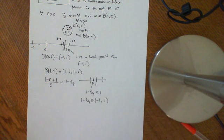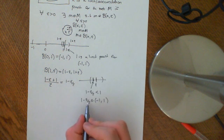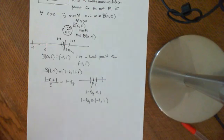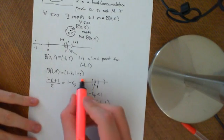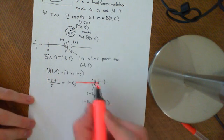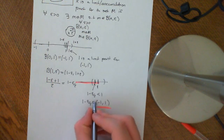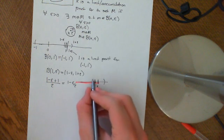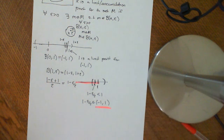To restress: the reason is that if I take any epsilon ball around one, I can always find you a point — namely one minus epsilon over two — which is an element of this set, this pink set, that is also in this open ball around one of radius epsilon. And therefore, this satisfies the definition of being a limit point of this set, negative one to one.